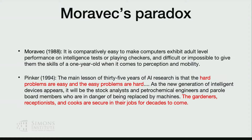Moravec said: it's comparatively easy to make computers exhibit adult-level performance on intelligence tests or playing checkers, but difficult to have the skills of a one-year-old. Pinker said it more pithily: the hard problems are easy, and the easy problems are hard. The gardeners, receptionists, and cooks are secure in their jobs for decades to come.